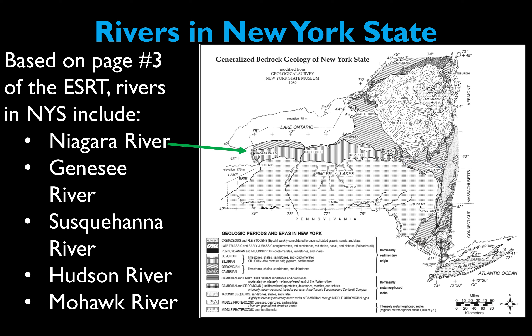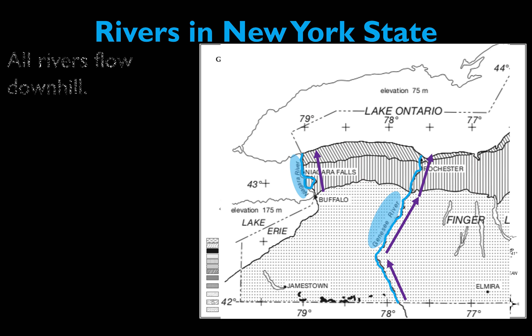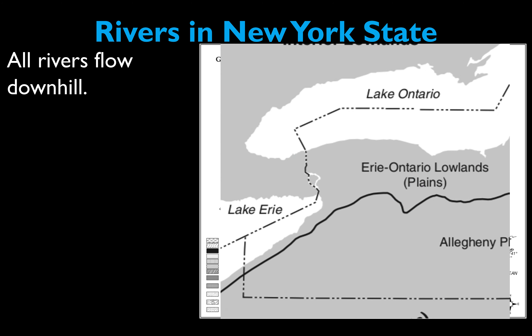I want to take the time to focus on two rivers specifically: the Niagara River and the Genesee River. I'm going to zoom in to those rivers so we can get a better look at them. You're going to need to know how to identify the direction of flow of these rivers. The first thing to remember is all rivers flow downhill. We can't just say that all rivers flow from north to south. These rivers may look oriented north-south, but they are actually flowing from south towards the north into Lake Ontario.